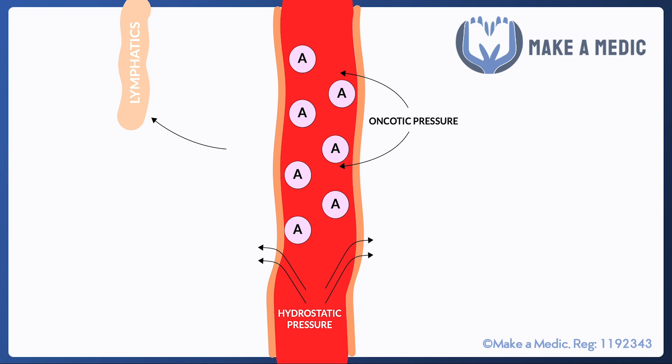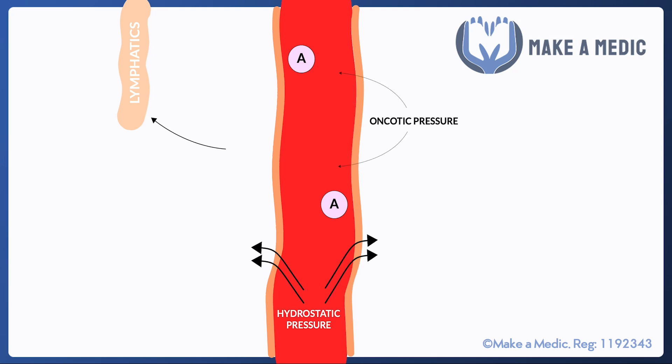Any residual fluid left within the interstitium can get soaked up by the lymphatics and delivered back to our circulatory system. In patients with chronic liver disease, given that their liver is damaged and blood is not flowing through it as easily, there is a lot of backlog of blood into the portal circulation and hence an increase in the hydrostatic pressure. This means that more fluid will be leaking out of the blood vessels into the interstitium. To compound matters further, patients with chronic liver disease are no longer producing albumin as much as before, and hence the oncotic pressure has decreased.